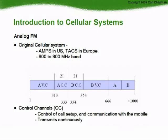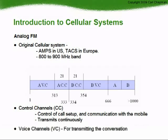Control channels are used to control call setup and communicate with the mobile when it is not in use. The control channel signal transmits continuously so the mobile can always find it. Voice channels are used to transmit a conversation that is in progress. With a limited number of channels available, cellular operators use a system called frequency reuse, where the same channel number can be used in multiple base stations.